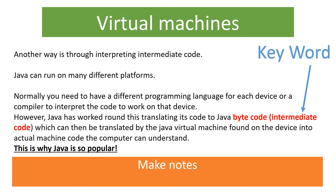One of the main ways that a virtual machine works is through using something called intermediate code — this can be called bytecode. For an example, I want to talk about Java. Java is a massively successful programming language because it can run on multiple different platforms. Quite often you're going to have to compile and interpret the code so it works on that device, which might mean turning it into an executable file or having a small program that compiles it when it arrives at your computer.